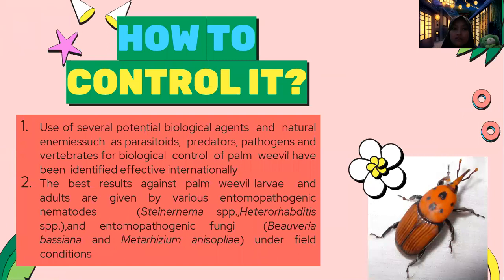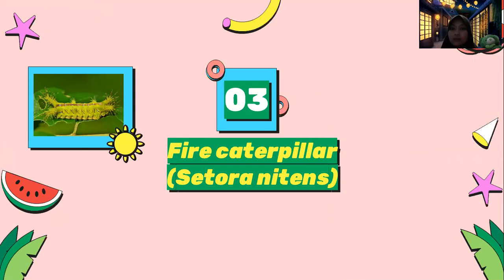How to control the palm weevil? First, use of several potential biological agents and natural enemies such as parasitoids, predators, pathogens, and vertebrates for biological control of palm weevil have been identified as effective worldwide. Second, the best results against palm weevil larvae and adults are given by various entomopathogenic nematodes such as Steinernema spp. and Heterorhabditis spp., and entomopathogenic fungi such as Beauveria bassiana and Metarhizium anisopliae, under field conditions.